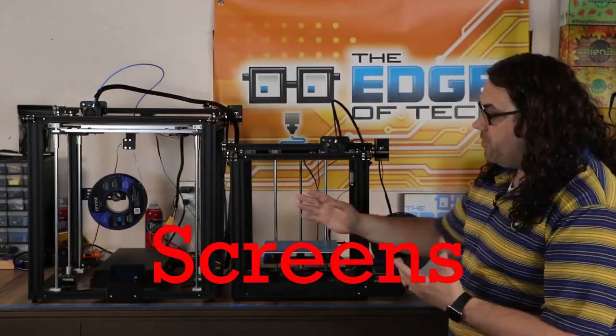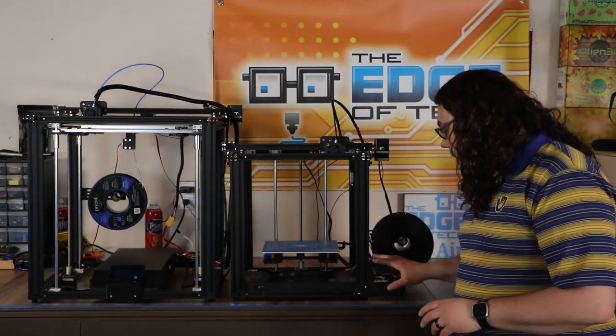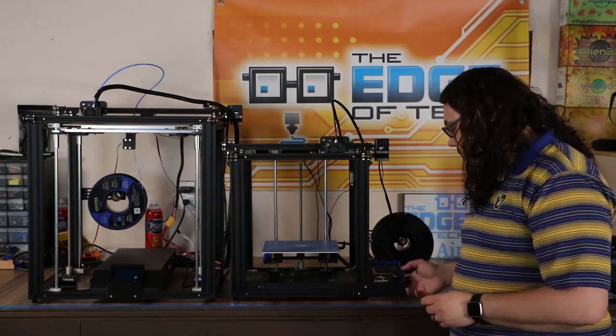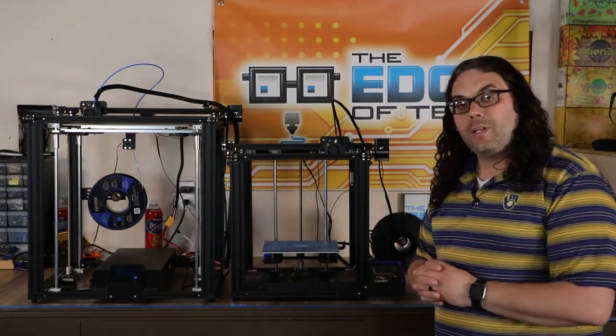Something else to look at is the screens on these two machines. This one is the stock screen. It's just like the Ender 3. It is a push button here and you scroll with the wheel, and that's the screen that comes on the Ender 5.